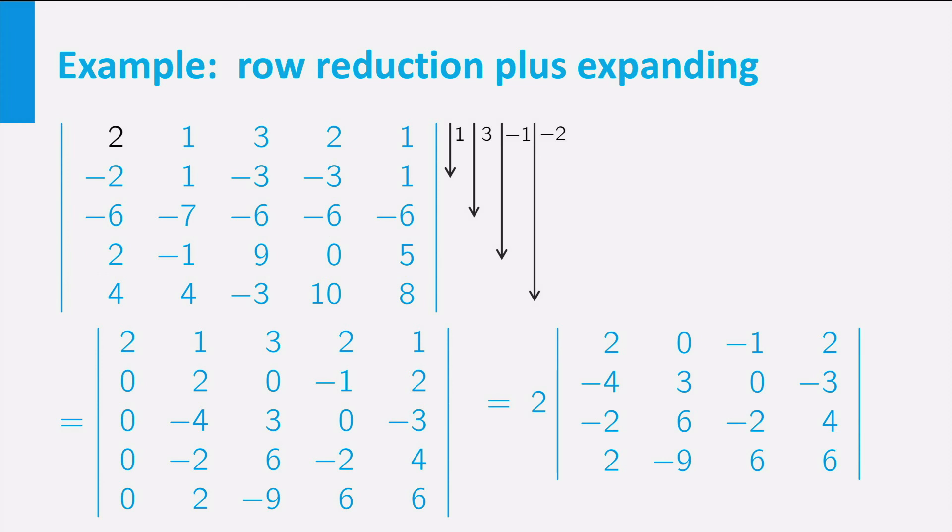These two steps can be repeated. I mean, first create zeros in the first column by row reduction, next expand across the first column. Every time you do this, row reduction followed by column expansion, the size gets smaller, and finally you end up with just one 2 by 2 determinant.